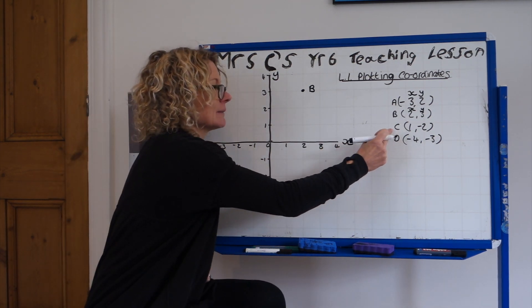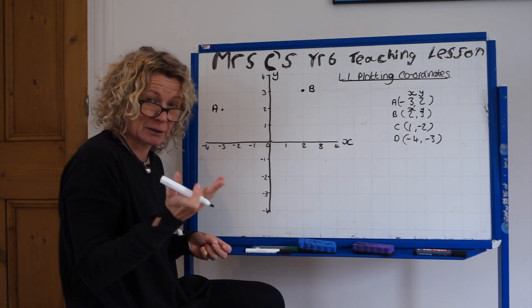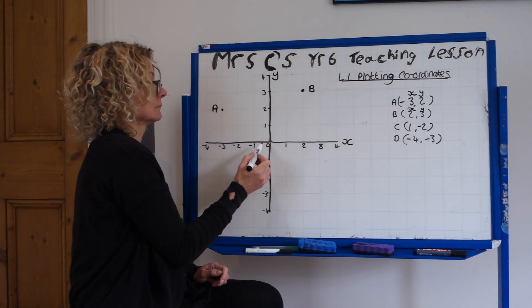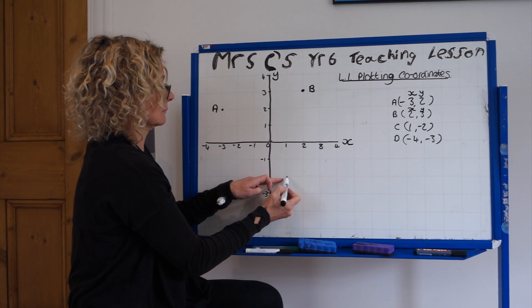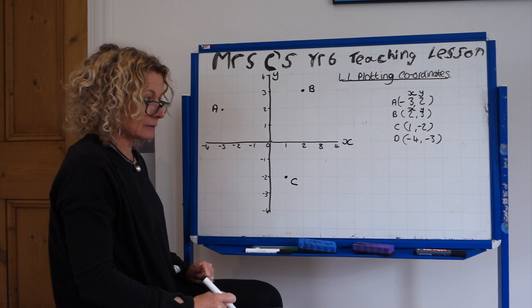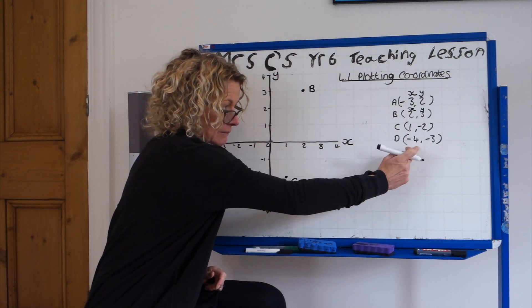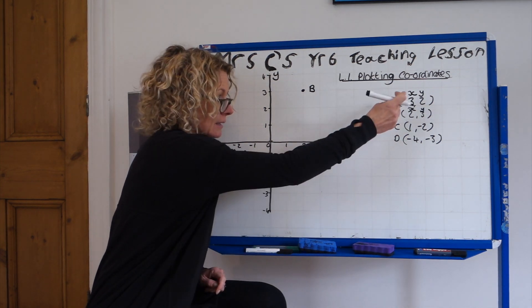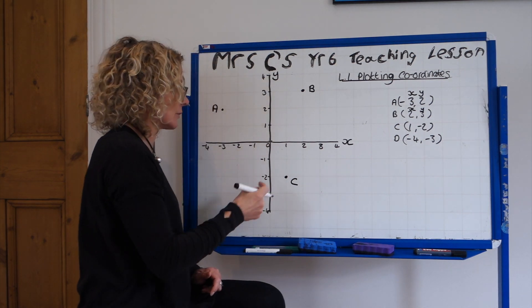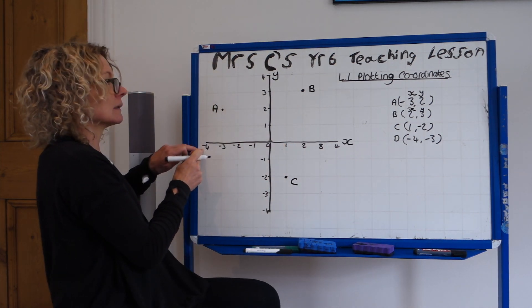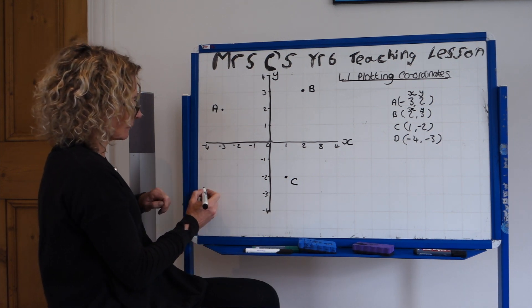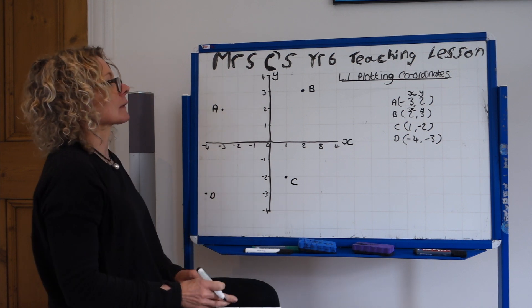Right, and now it is C. I'm not going to say anything. I'm just going to do it and hopefully you'll be able to do it too. And the last one is D. These are both in minuses now, so they're in minus quadrants. So minus 4 on the x and minus 3 on the y.